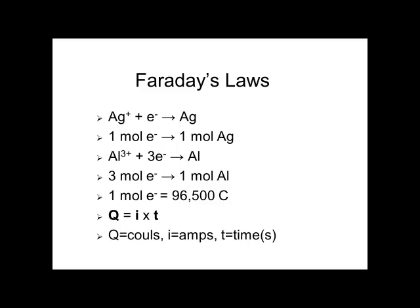Faraday's laws govern electrolysis. Look at these examples. Silver+ picks up an electron to become silver metal, a reduction. It takes one mole of electrons to make one mole of silver. In the case of aluminum 3+, it takes three electrons to make aluminum, so it's three moles of electrons to make one mole of aluminum. A mole of electrons is also 96,500 coulombs. One can calculate the number of coulombs, that is the charge, by taking i, the number of amps, and multiply it by the time. The time has to be in seconds.